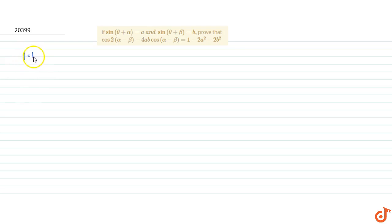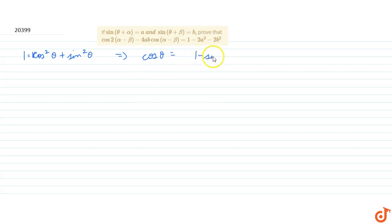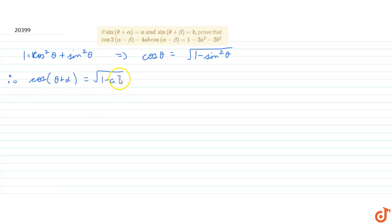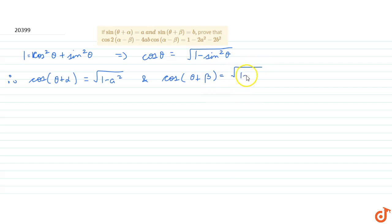We know that cos²θ + sin²θ = 1, which implies cos θ = √(1 - sin²θ). Therefore, cos(θ + α) = √(1 - a²) because sin(θ + α) = a, and cos(θ + β) = √(1 - b²) because sin(θ + β) = b.